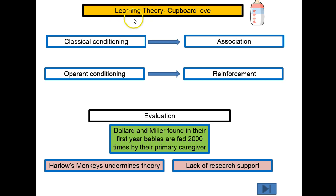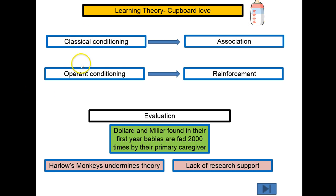Our first theory is the learning theory. They termed attachment — how babies and caregivers get attached — the 'cupboard love theory,' simply because it's all based around food. It's all about people getting attached to their primary caregivers because of the supply of food given to them. For learning theory, they focus on the two main ways we learn behaviour, because they see attachment as a type of learned behaviour. The first one is classical conditioning, and a key word associated with classical conditioning is learning via association.